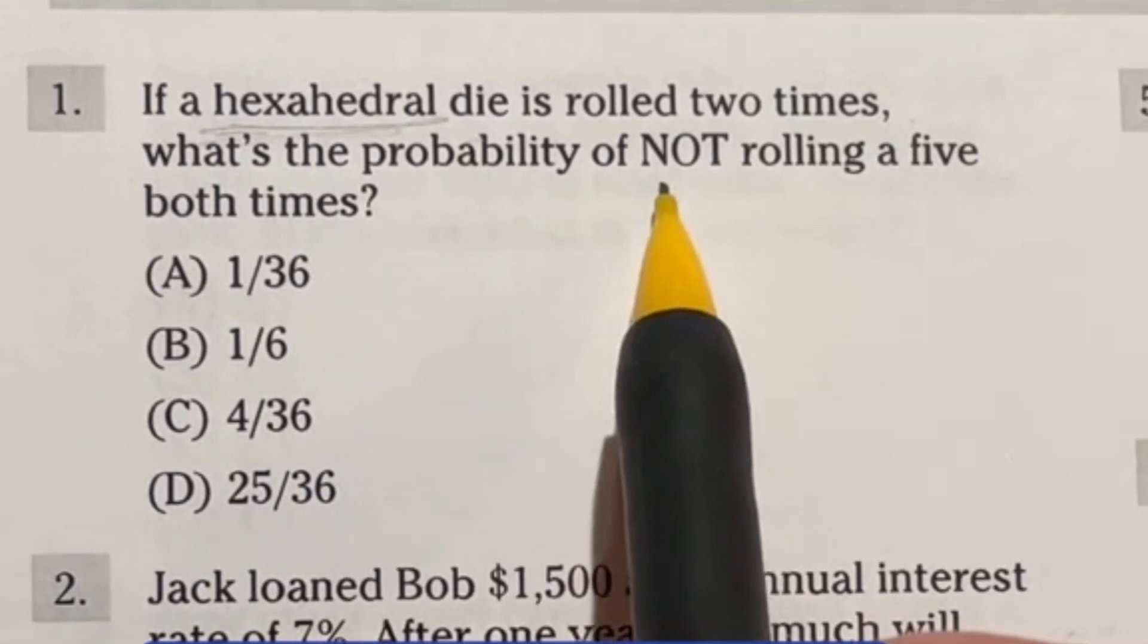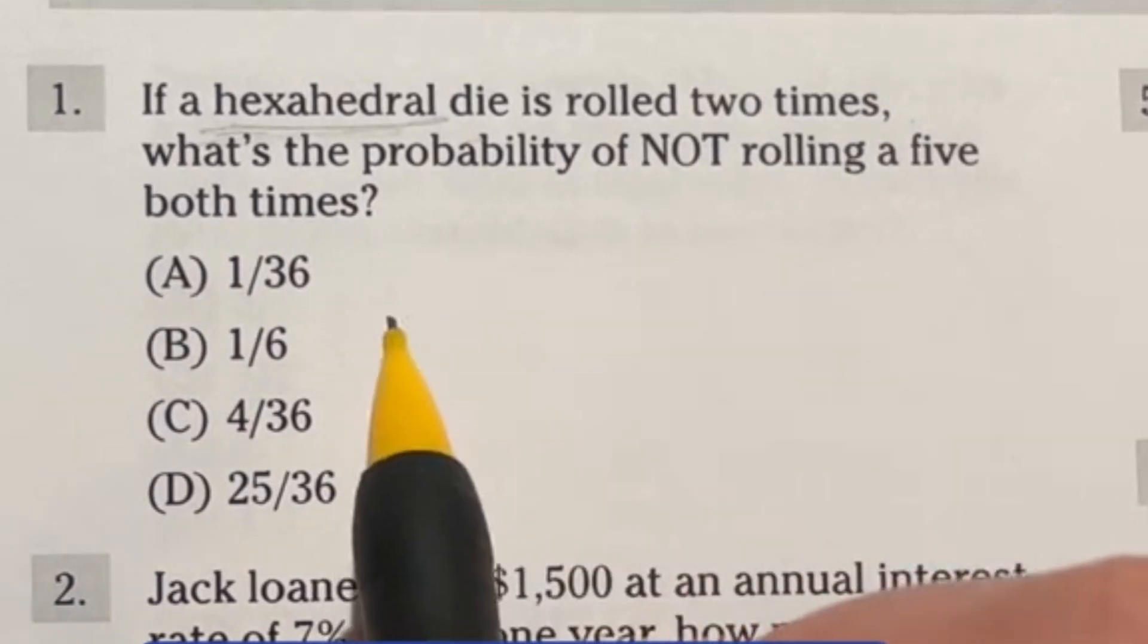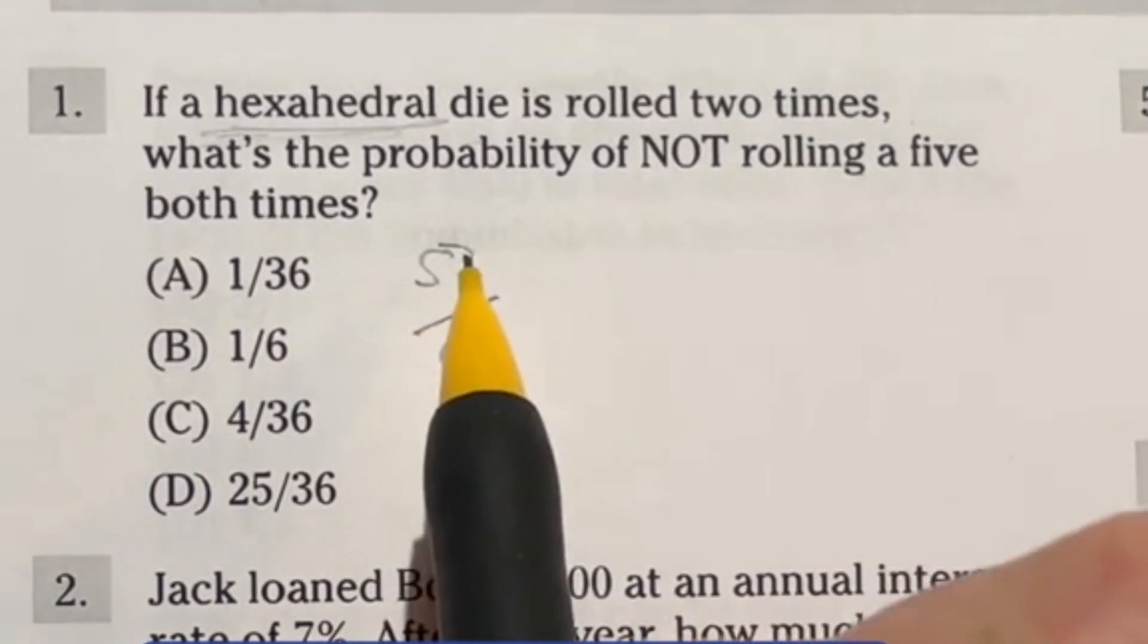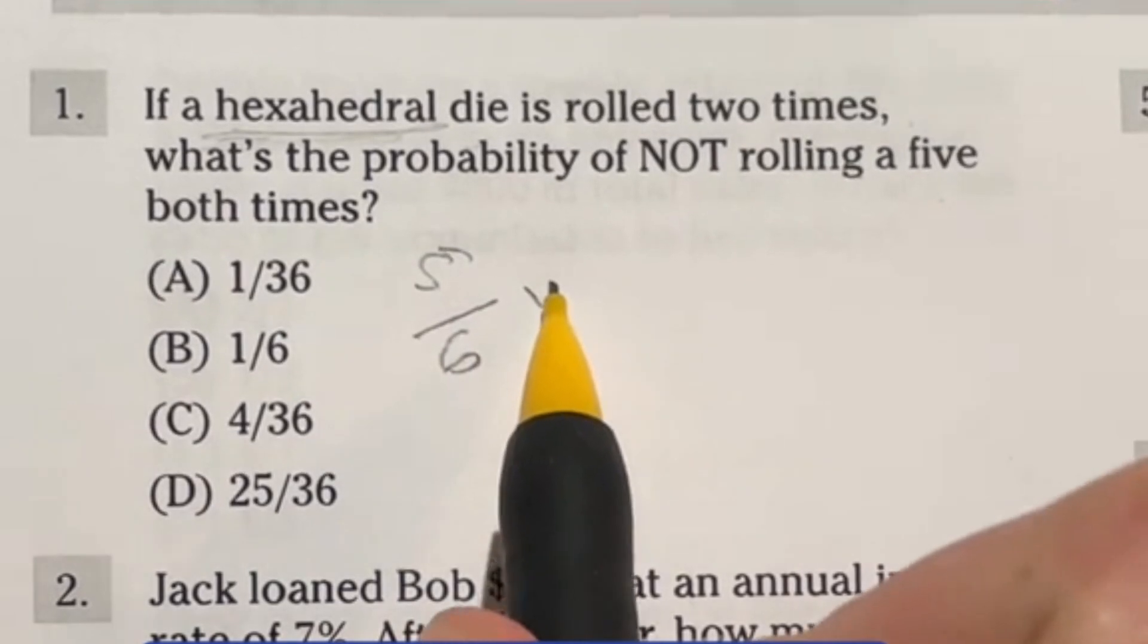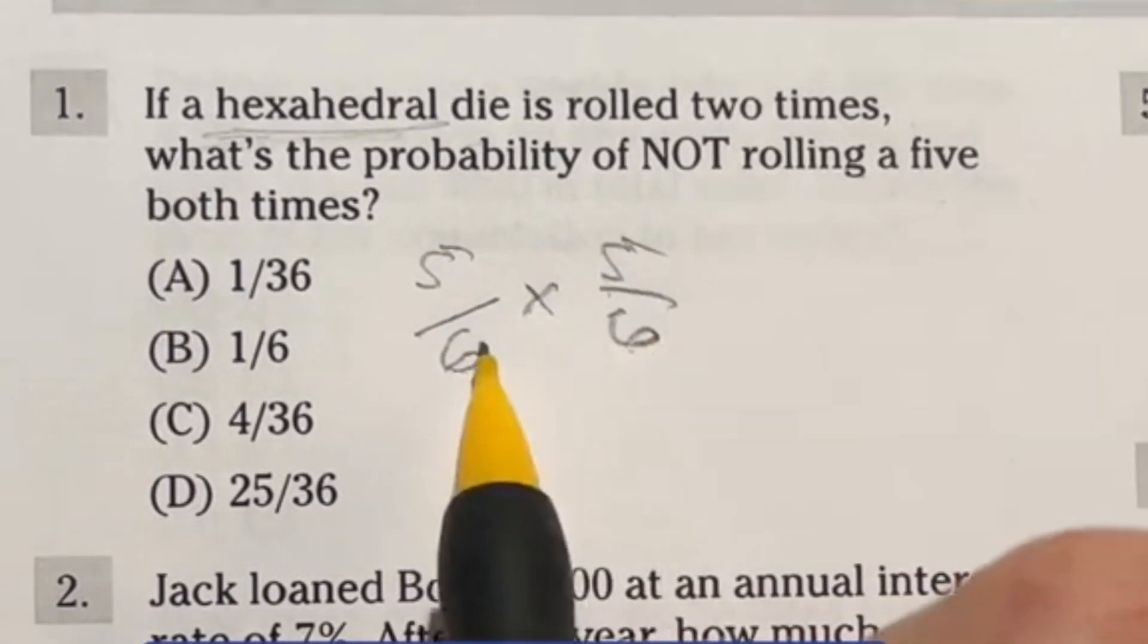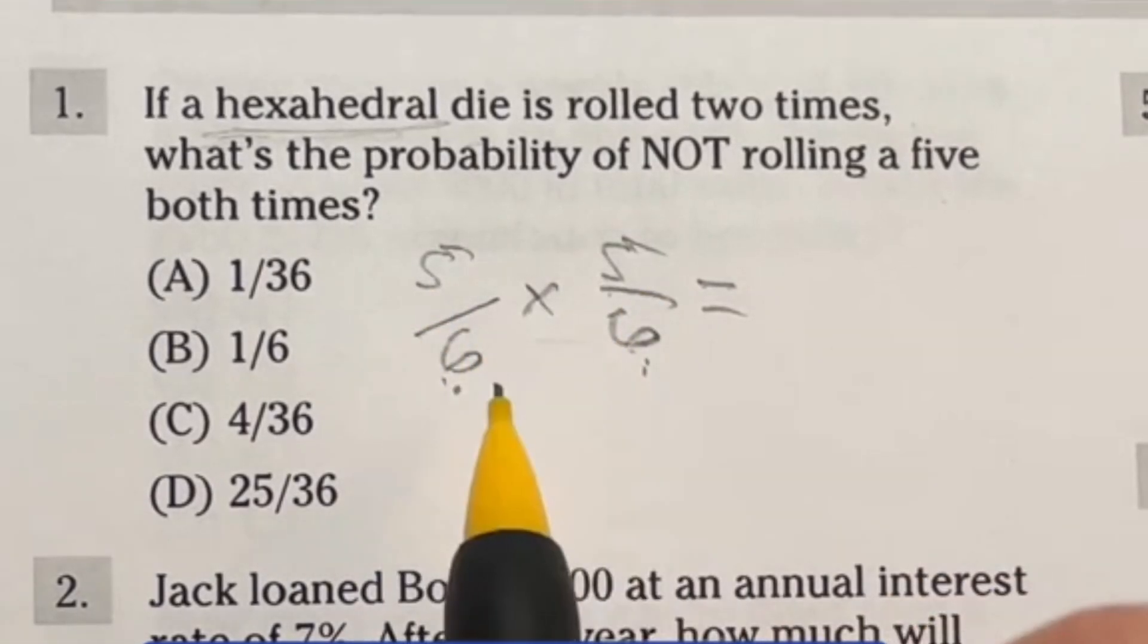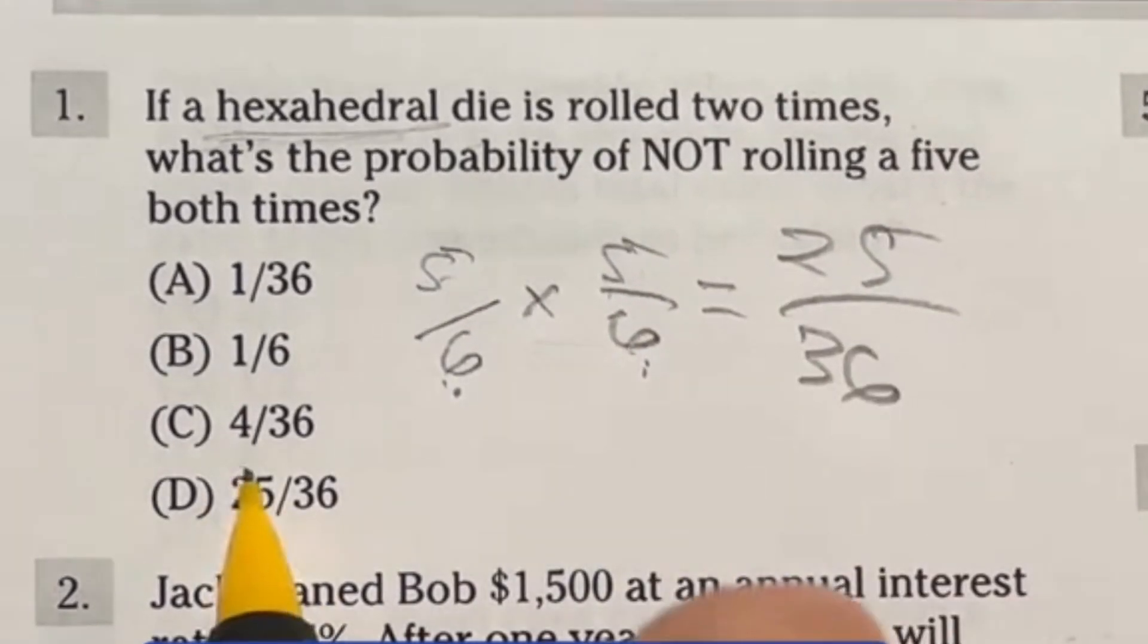So what's the probability of not rolling a five both times? That means neither one of the two rolls can be a five. So instead of looking at the probability of rolling a five we need the probability of not. Well there are six items on this die one through six and five of those six are not the number five. Now that would be the probability of rolling not a five once but we need to do this two times and by the multiplication rule with probability we can just go ahead and multiply five over six times five over six because that's the probability of not being a five the first time not being a five the second time. So five times five is 25 and six times six is 36. So it looks like our answer here is D.